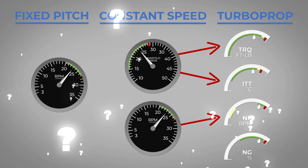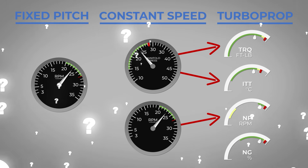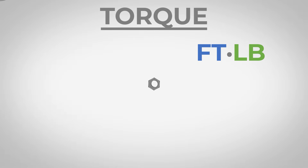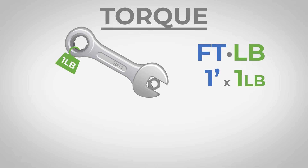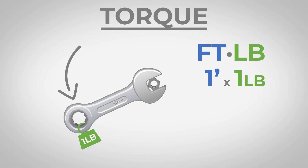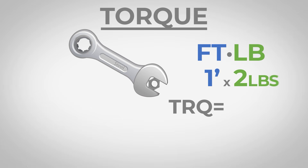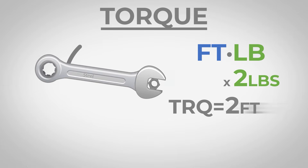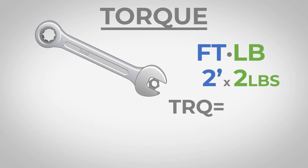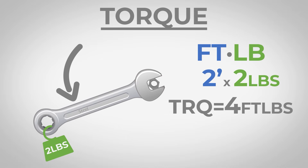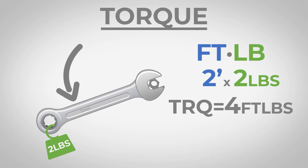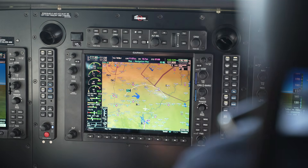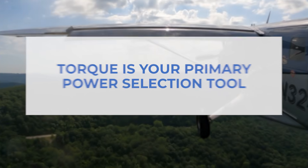Luckily, they aren't as complicated as they sound. Let's walk through each of them, starting with torque. Torque is measured and displayed in foot-pounds, which is kind of a weird concept. But if you imagine a one-foot-long lever and you put one pound of pressure on the end of that lever, the resulting twisting motion is one foot-pound of torque. If you applied two pounds of pressure on the end of that one-foot lever, that would be two foot-pounds of torque. If you made the lever two feet long and applied that same two pounds of pressure, you now have four foot-pounds of torque. It's basically just a combined measure of force and leverage. So as you're adjusting the power lever, one of the things that's going to move on your engine instruments is torque. Torque is kind of your primary power selection tool.